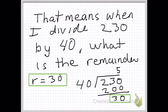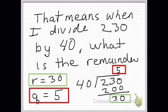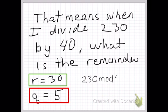So we set it up. 40 goes into 230 five times. 5 times 40 equals 200, and we find a remainder of 30. So our remainder equals 30, and our quotient q equals 5 — that's the greatest number of times we can divide 40 into 230. So 230 mod 40 equals 30.